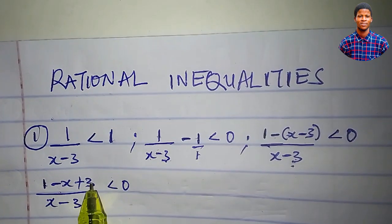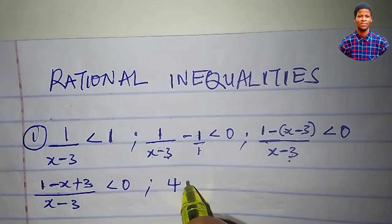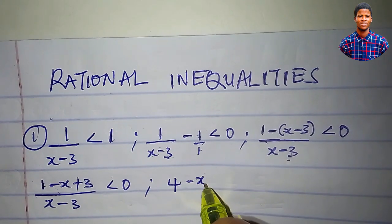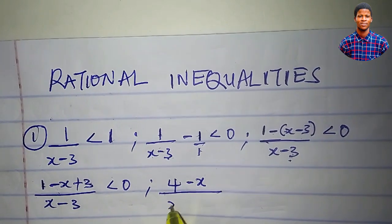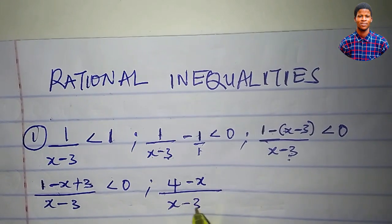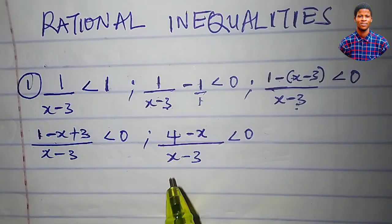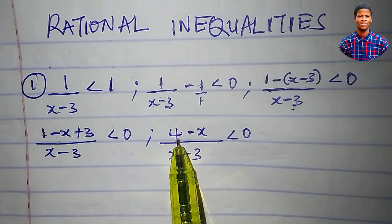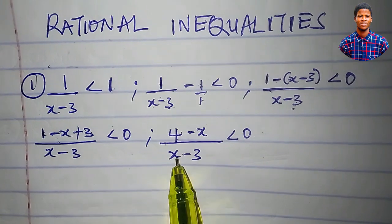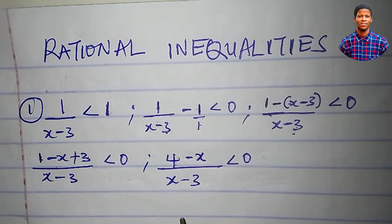1 plus 3 is 4. So we'll have 4 minus x, all over x minus 3, is less than 0. From here, let us set the numerator to 0 and also the denominator to 0.